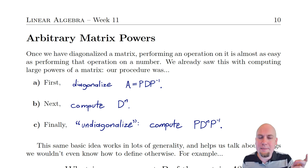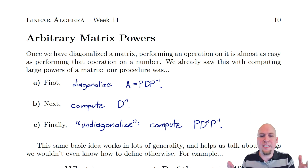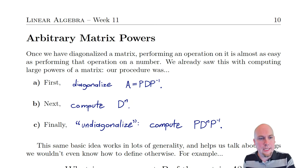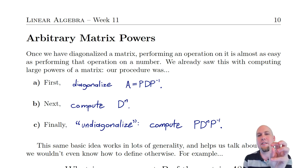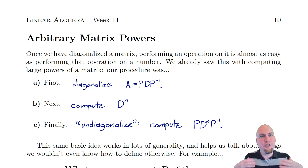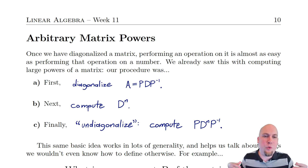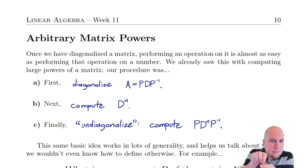But really this procedure doesn't require n to be an integer. We could do this exact same thing with n being a half, or the square root of 2, or pi, or a negative number. It doesn't matter. All these things work because this matrix D is diagonal, and you just do things to that diagonal piece. This is a general theme: if you want to do something to a matrix, just diagonalize it and do that thing to the diagonal entries.